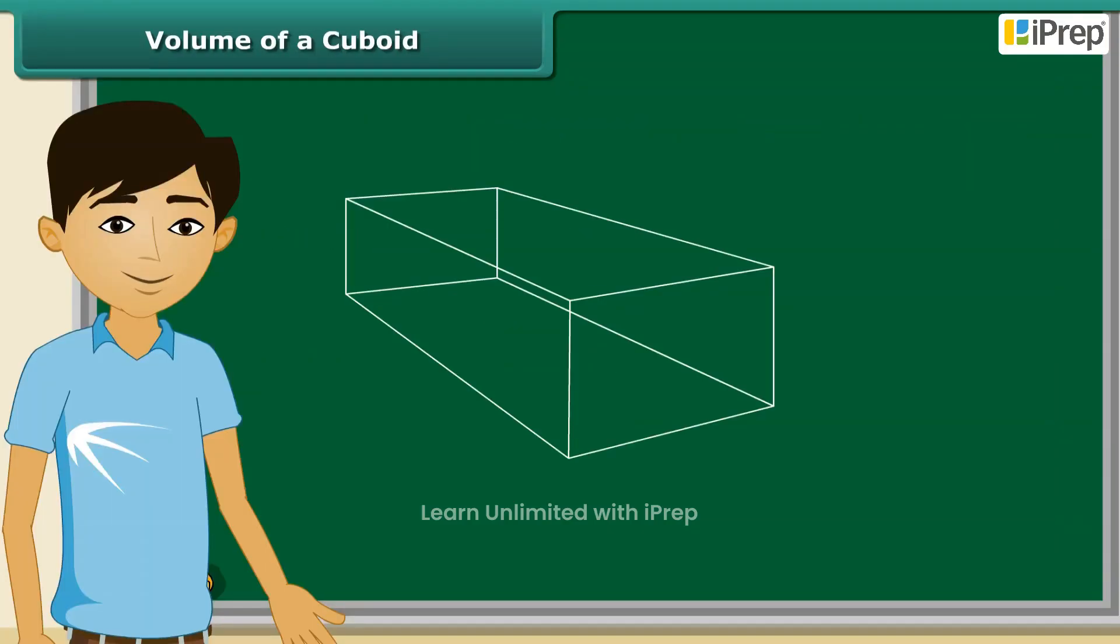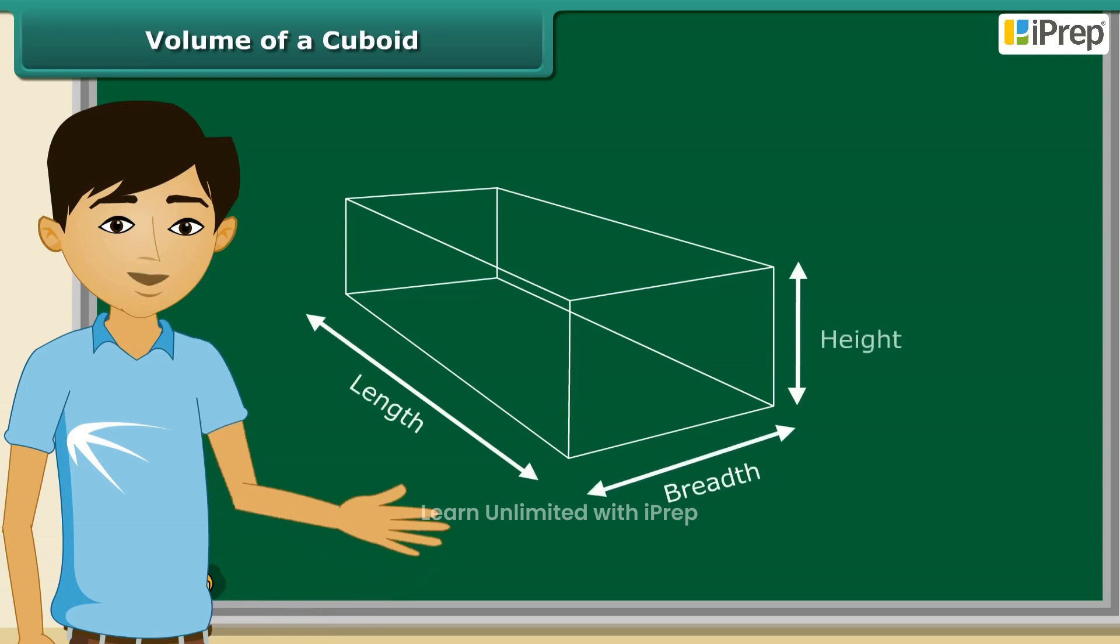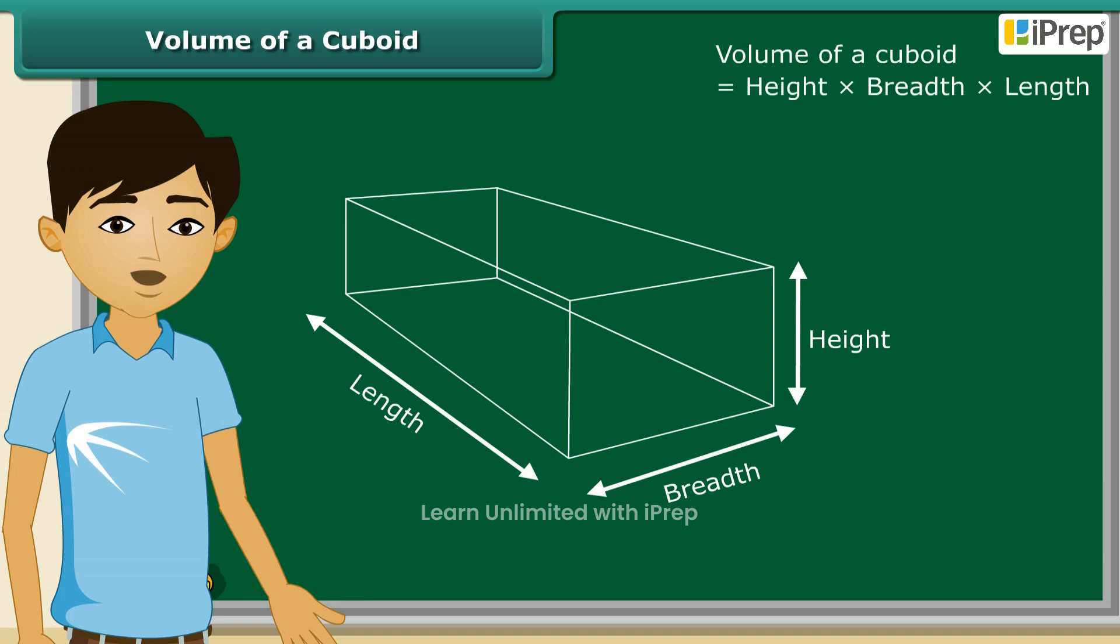Look at this cuboid. We know it's a three-dimensional shape having dimensions: length, breadth, and height. It's very simple and easy to calculate the volume of a cuboid. Just multiply height, breadth, and length of the cuboid, and you will get the volume.